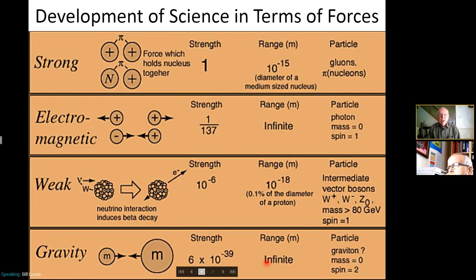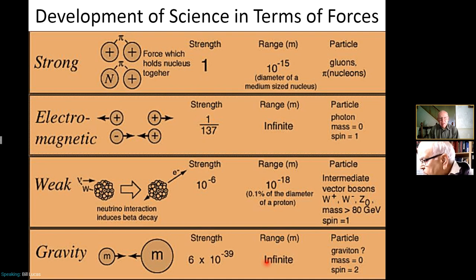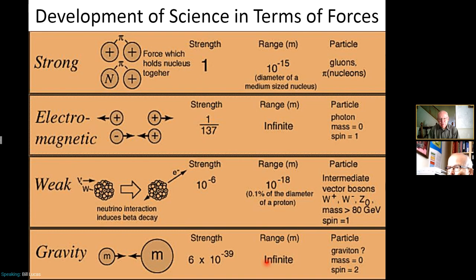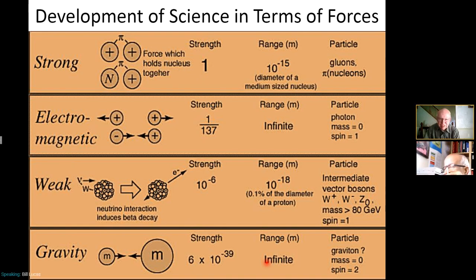Science has been developed in terms of forces. Currently, the politically correct theories say there are four fundamental forces: the strong force, the electromagnetic force, the weak force, and gravity. We're going to see from this presentation how many of these can possibly be true. The modern approach is that the weak force can be attached to the electromagnetic force to give the electroweak force, and then the strong interaction force can be combined to give a grand unified force. The problem is gravity doesn't fit, and they don't know how to explain the quantization of gravity.